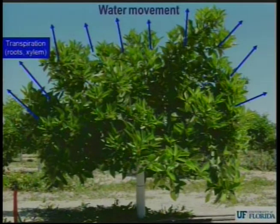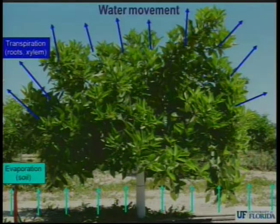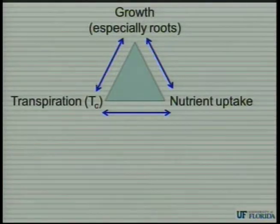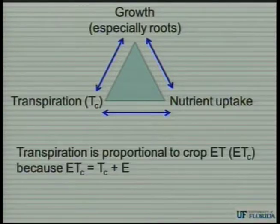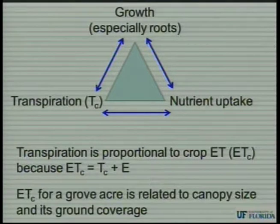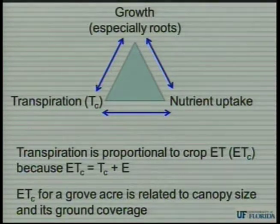Here's a quick graphic of water movement through a tree. It gets taken up by the roots — this is the transpiration component, which goes through the leaves via the roots and xylem. There's also an evaporation component from the soil, and the two together make evapotranspiration, which is what we can measure. Growth, especially in the roots, is inextricably related to transpiration and also to nutrient uptake — the three are related. Transpiration is proportional to crop ET, because ET is transpiration plus evaporation. ET crop for a grove acre is related to canopy size and ground coverage — that's how this model works.